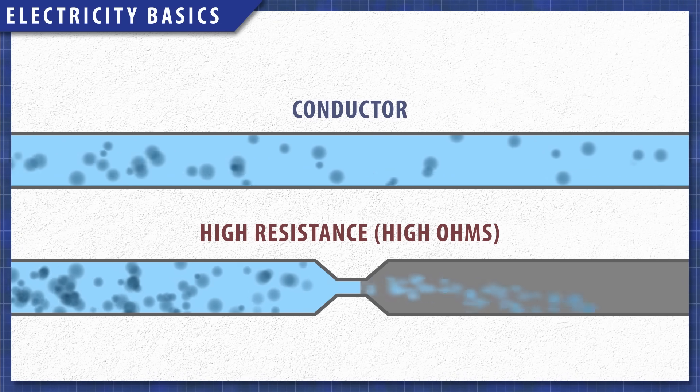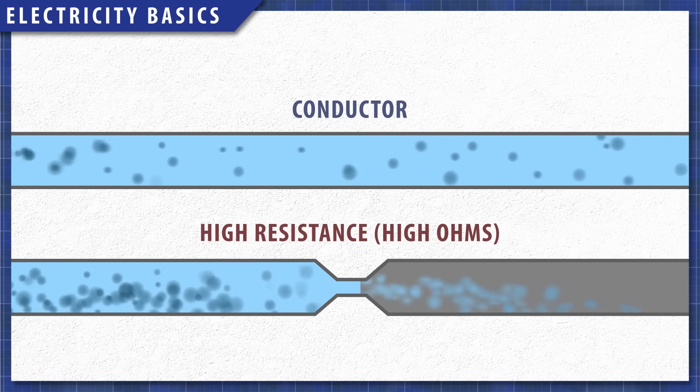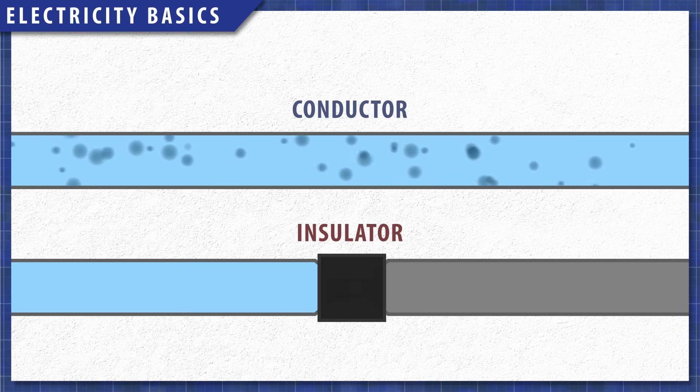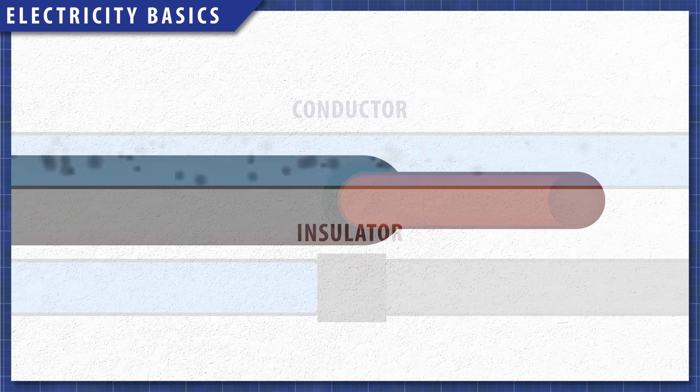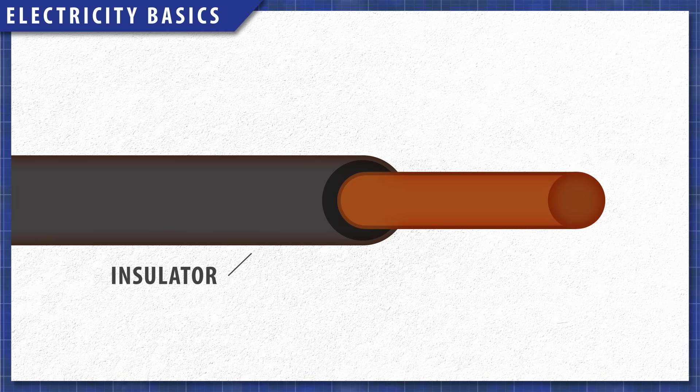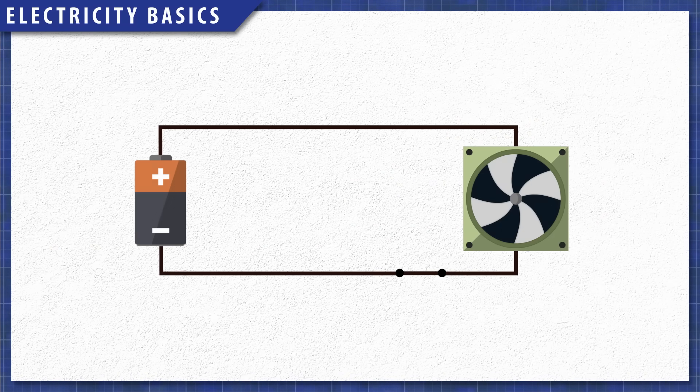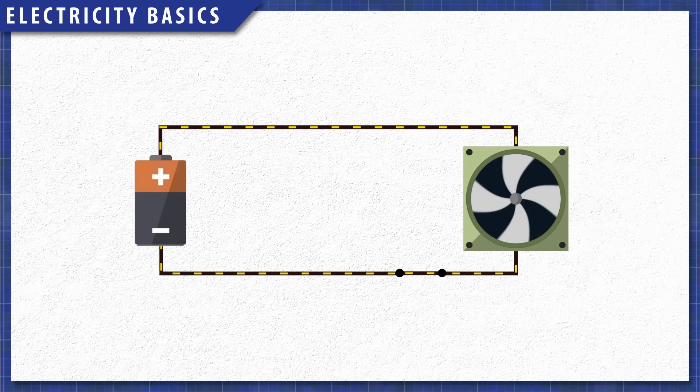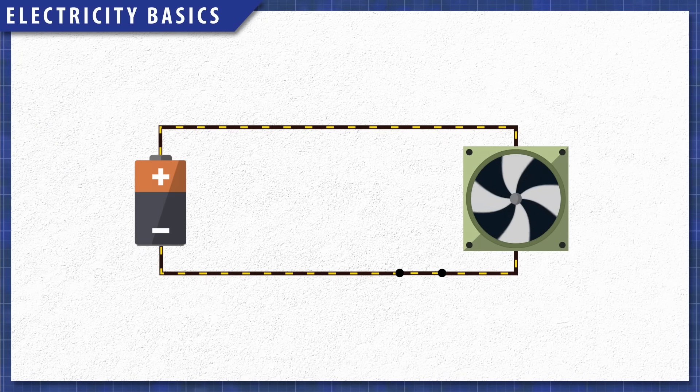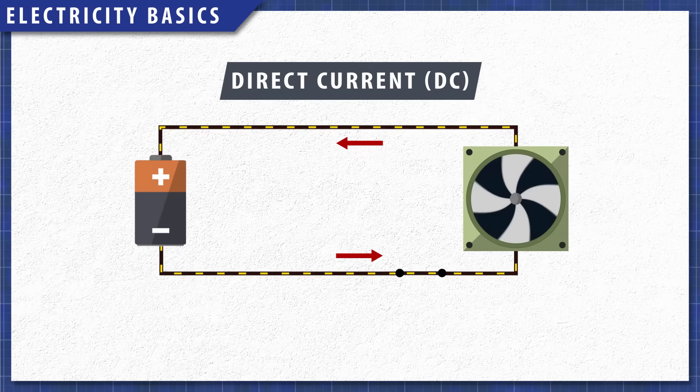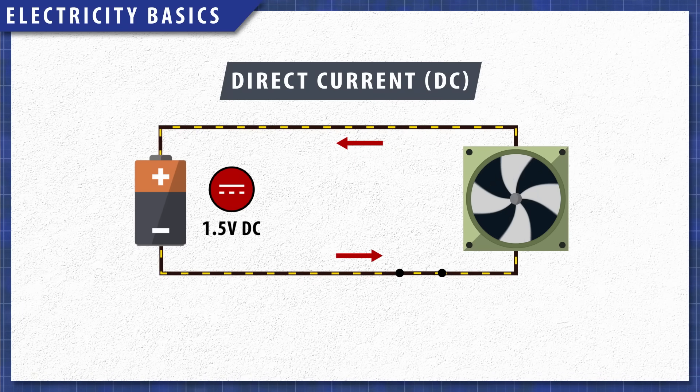Conductors have low resistance allowing electrons to move easily through them. Insulators have an extremely high resistance to the flow of electrons. For example copper wire is insulated by a plastic sheath. If we connect these wires together to a power source we get a complete electrical circuit. Batteries provide direct current or DC power as the current always flows in a single direction. This is represented by a dash line on the multimeter.